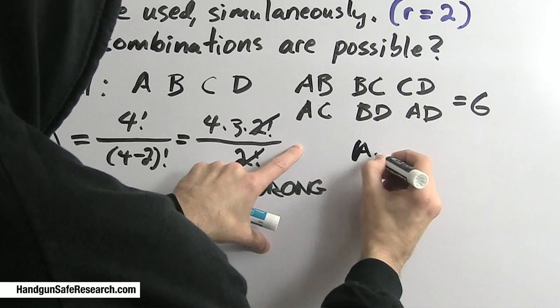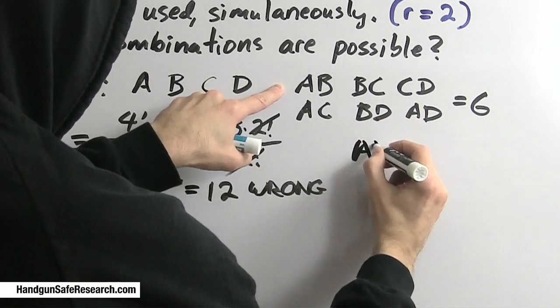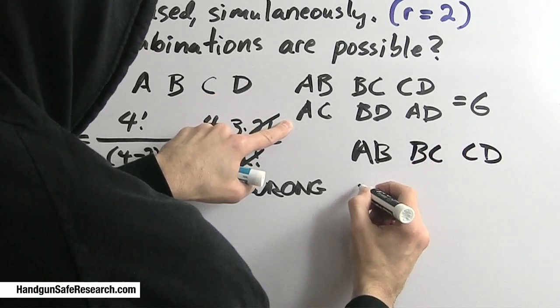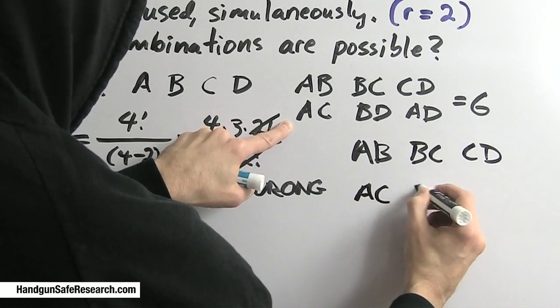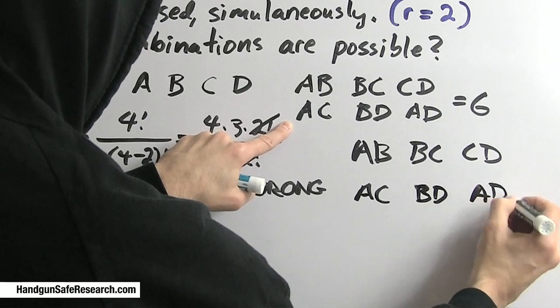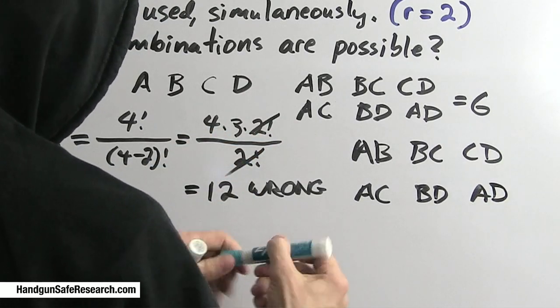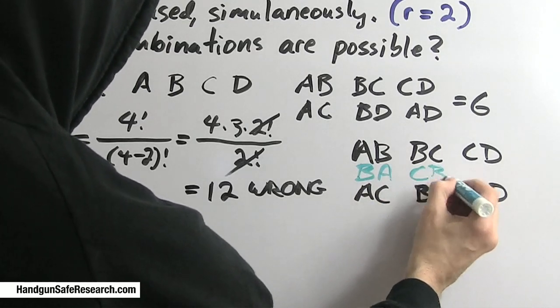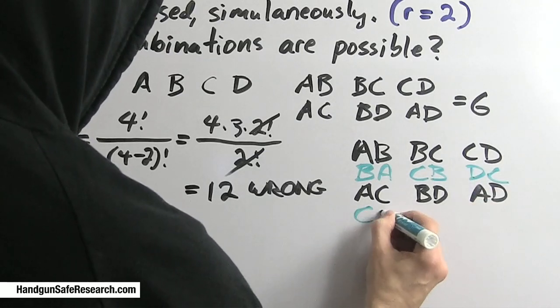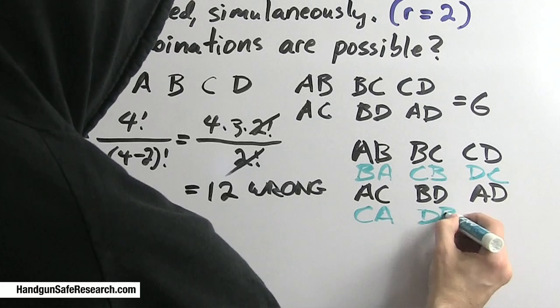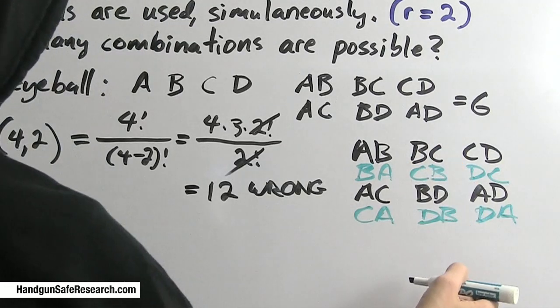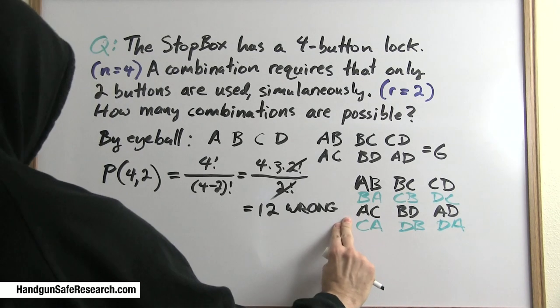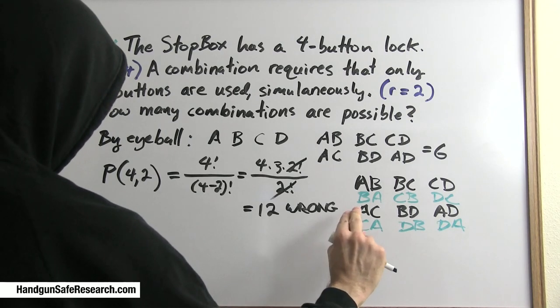That's why I eyeballed it first. What does this number 12 represent? Why is this wrong? What I've just calculated here is this top row: A and B, B and C, C and D, and then the next row: A and C, B and D, A and D, and then I also accounted for something else. B and A, C and B, D and C, C and A, D and B, D and A. Alternate orderings, which I don't really need to account for. If I consider myself to be pressing A and C together at the same time, that's the same thing as pressing C and A together.